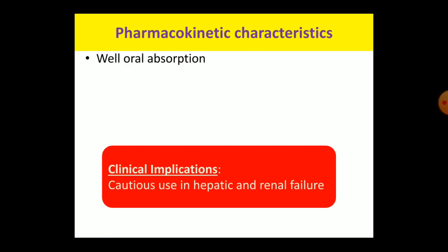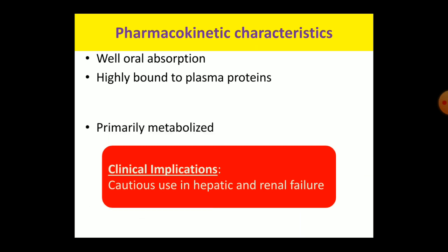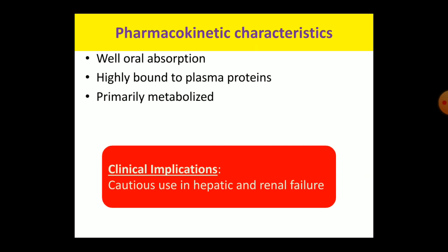Regarding pharmacokinetic characteristics: sulfonylureas are well absorbed orally, very tightly bound to plasma proteins, and therefore have a low volume of distribution. They are primarily metabolized in the liver, and some metabolites are active. They are finally eliminated through the kidney. Because of primarily hepatic metabolism and renal excretion, cautious use is required in cases of hepatic and renal failure. In cases of marginal hepatic or renal dysfunction, chances of hypoglycemia will also be higher.